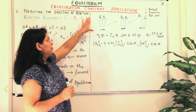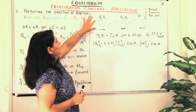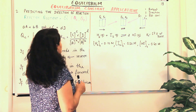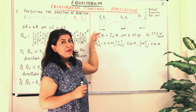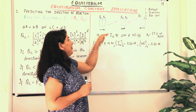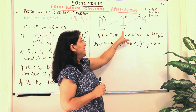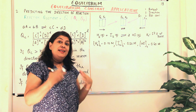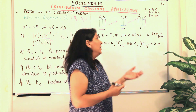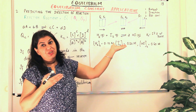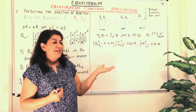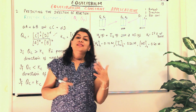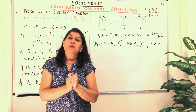To summarize with a diagram: if Qc is less than Kc, more products are needed, so the reaction proceeds in the forward direction. If Qc equals Kc, the reaction is at equilibrium. If Qc is greater than Kc, there are already too many products, so the reaction proceeds in the backward direction, favouring the formation of reactants. Both cases proceed until Qc and Kc become equal and equilibrium is established.